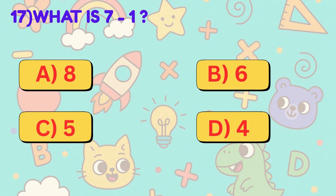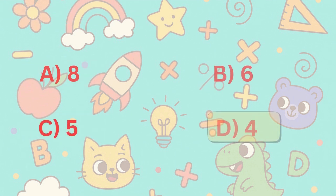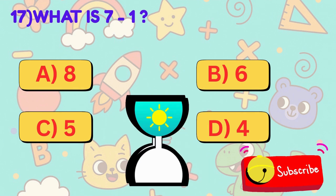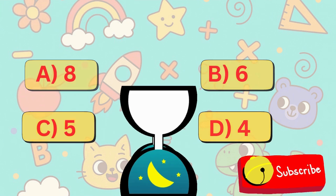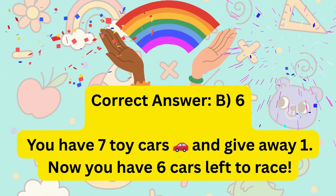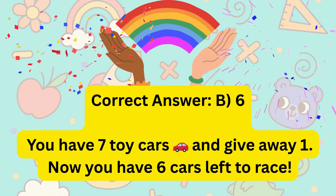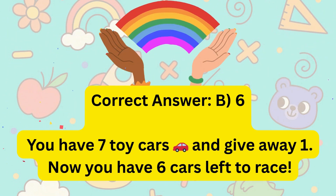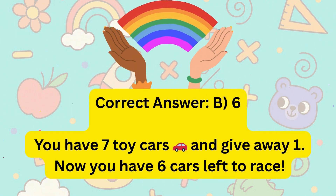17. What is 7 minus 1? Is it A, 8, B, 6, C, 5, or D, 4? Correct answer is B, 6. You have 7 toy cars and give away 1. Now you have 6 cars left to race.